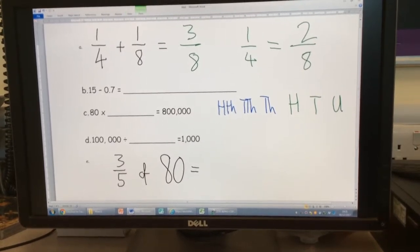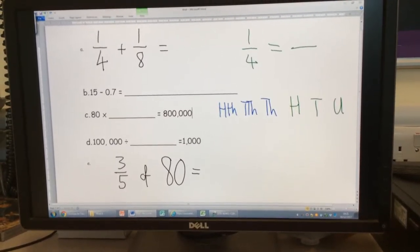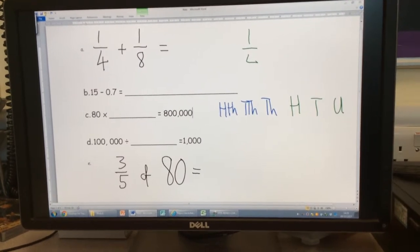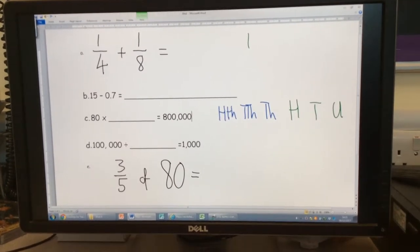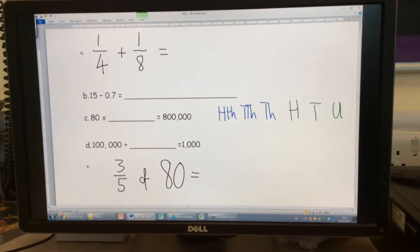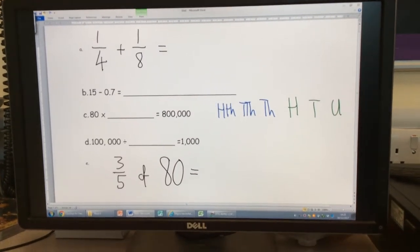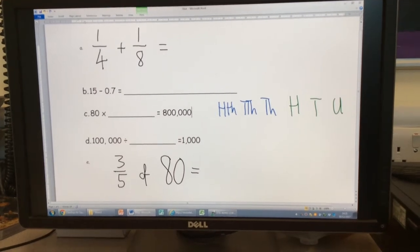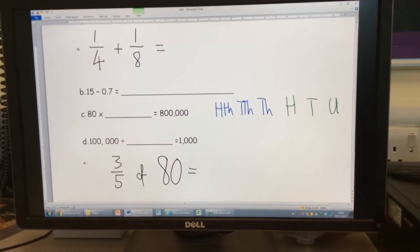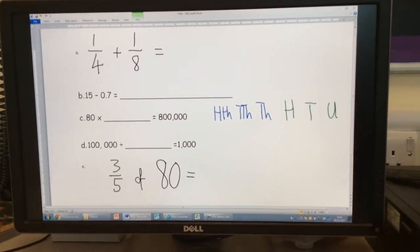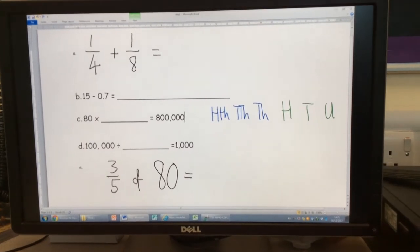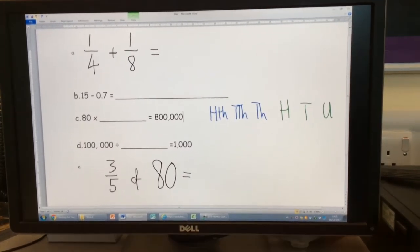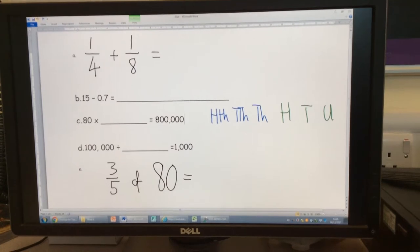Right, okay, next one. Fifteen take away zero point seven. Somebody from this side of the room, tell me how are we going to do that one? Sarah. We're going to turn the numbers into decimals. Aren't they already in decimals, Sarah? Into money. We're going to pretend the money to help us out here.